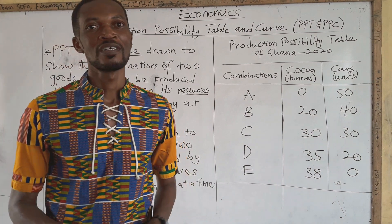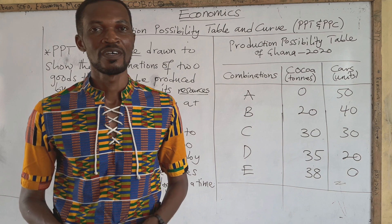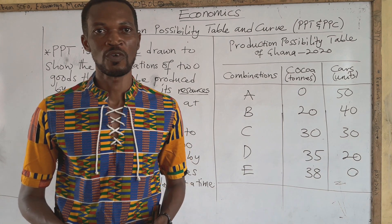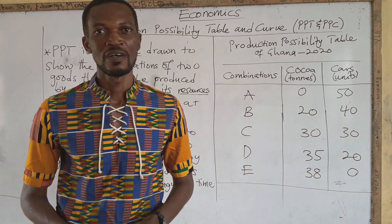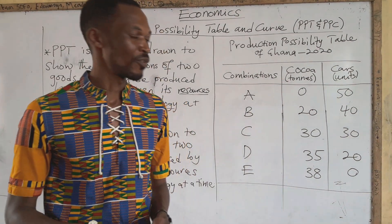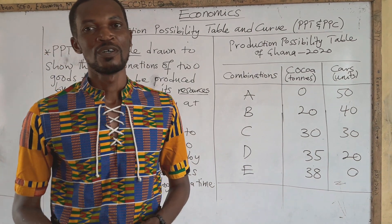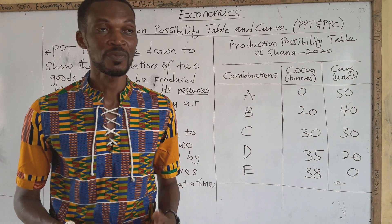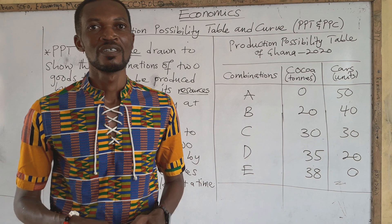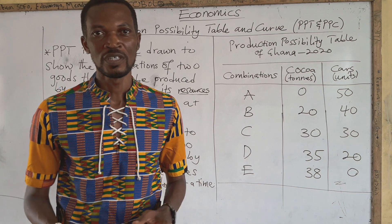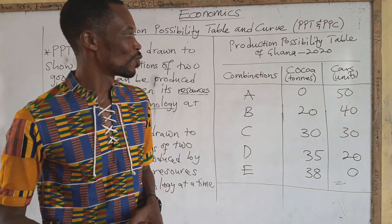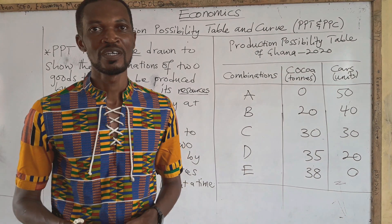Today I will start with the production possibility table and curve. Because of the size of some videos when trying to upload and download, it creates problems, so I'm going to make the videos short so we can easily download them. By the end of this series, you should be able to use the production possibility frontier to explain economic fundamentals: scarcity, choice, opportunity cost, and efficiency. You should be able to say what the production possibility table is and what the curve is, and draw the table to explain the relationship between the goods being produced.